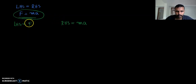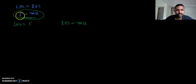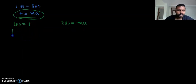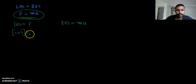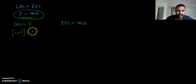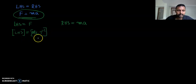I am teaching you that method — look carefully. We will write the LHS as F and RHS as MA. Then we will write the dimensional formula of LHS. The dimensional formula of force is MLT raised to minus 2. Therefore, MLT raised to minus 2 is the dimensional formula of LHS.